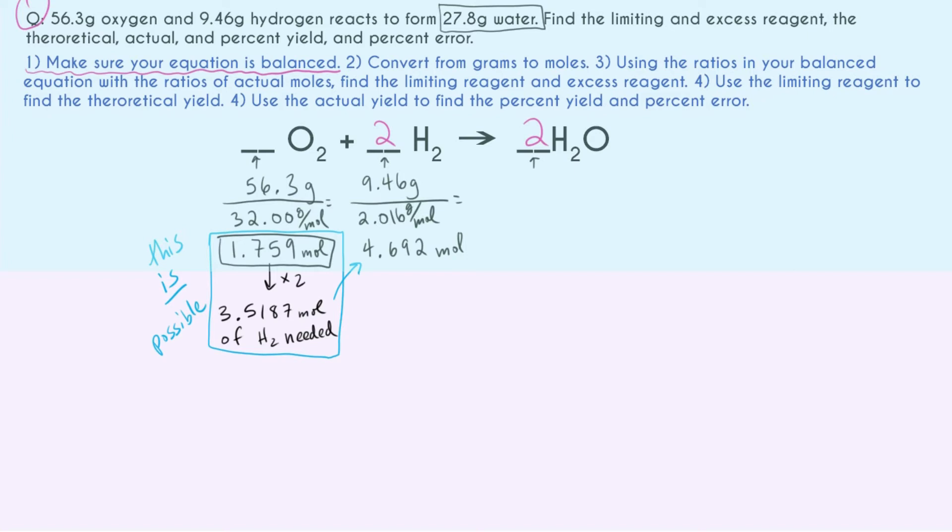And just to show you the other example, if we had started with H2 and said, the mole ratio is two to one, so however many moles of H2 we have, we need exactly one half of that for oxygen. And we say, we have 4.692 moles of H2, which means to find out the number of moles of oxygen needed, we just divide that.